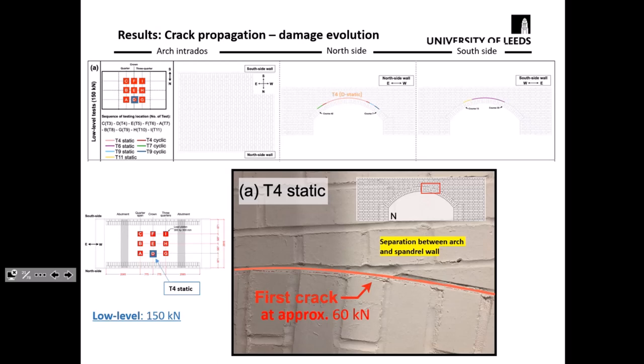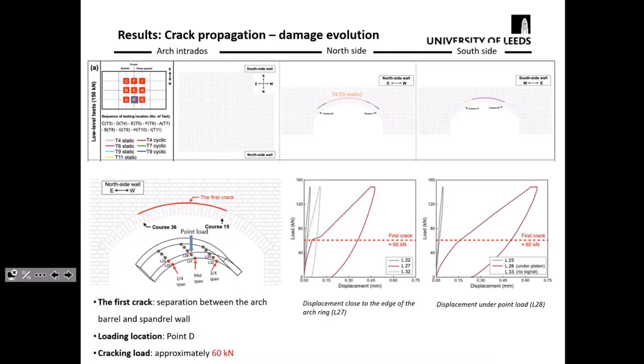Here I'm showing the first crack observed under low-level test conditions — a hairline crack that happened at 60 kN, and we saw the separation. These are some load-displacement curves: at the transducer location 0.27 — the load displacement curve very close to the spandrel — you can clearly see a change of stiffness, indicating the development of the crack. And this is the load-displacement curve at 0.28, exactly under the point load.